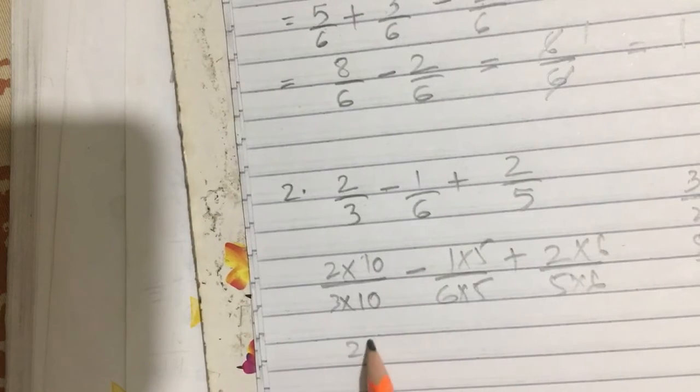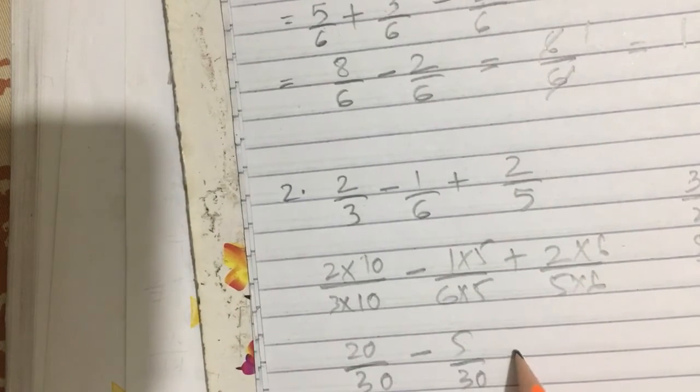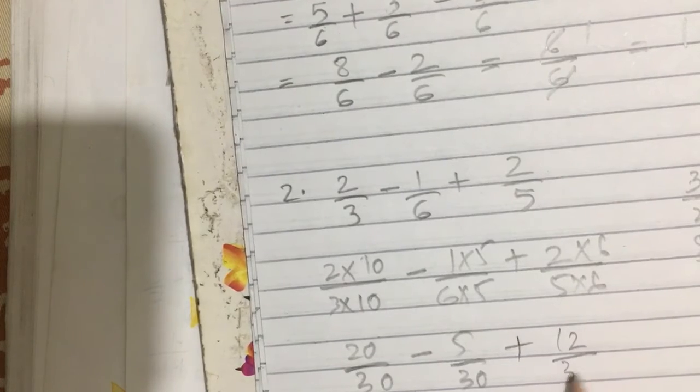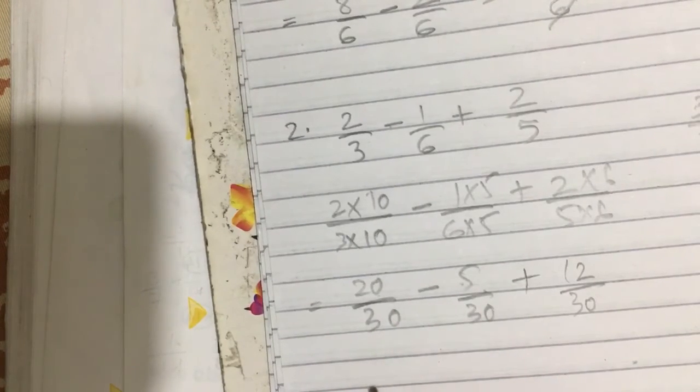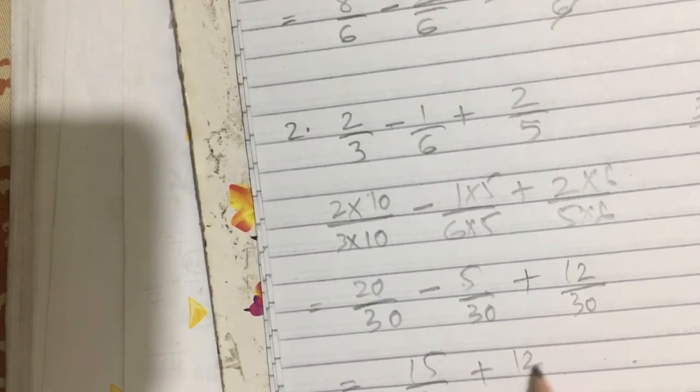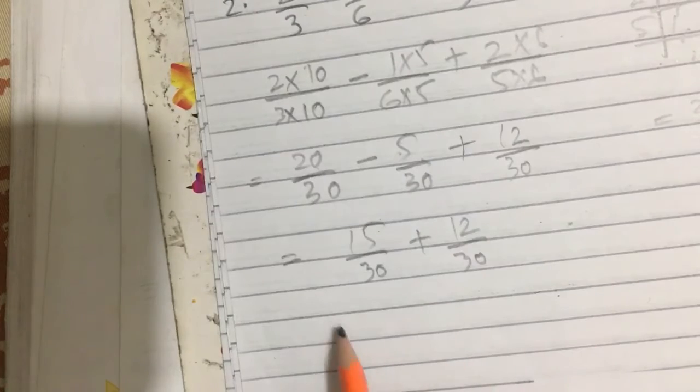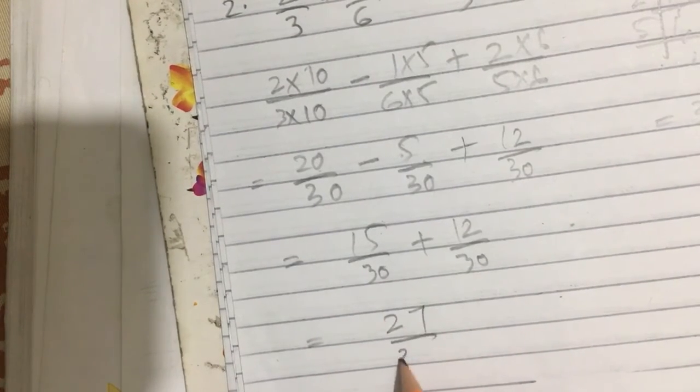Now if we solve this, this is 20 by 30 minus 5 by 30 plus 12 by 30. Now first solve left: 20 minus 5 is equal to 15 by 30, plus 12 by 30. Then 15 plus 12 is equal to 27 by 30.